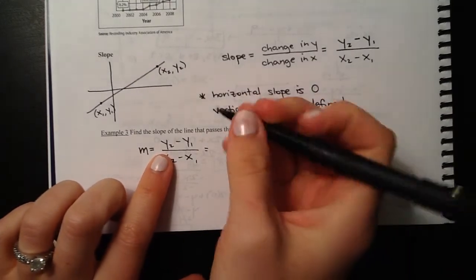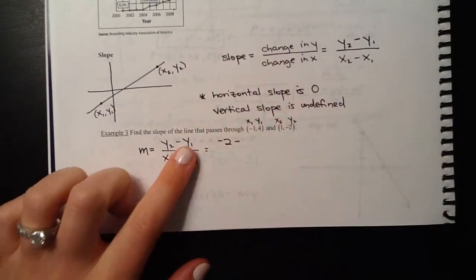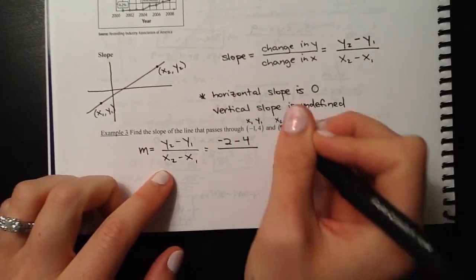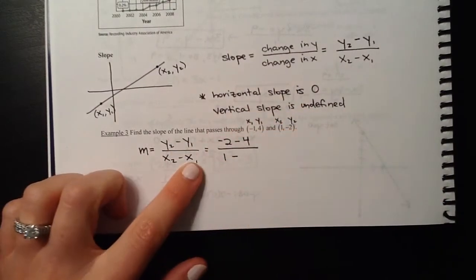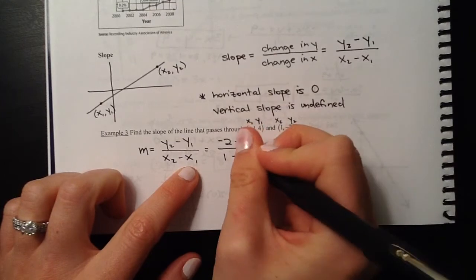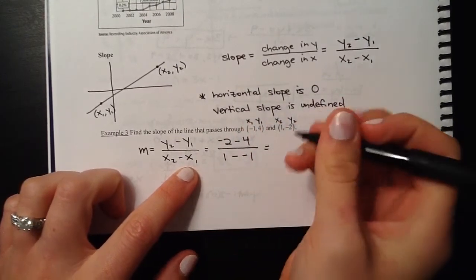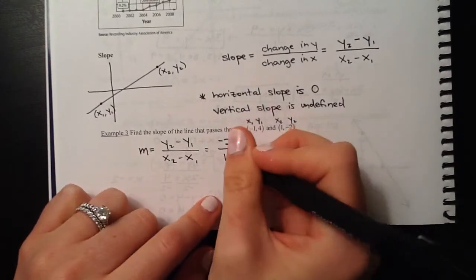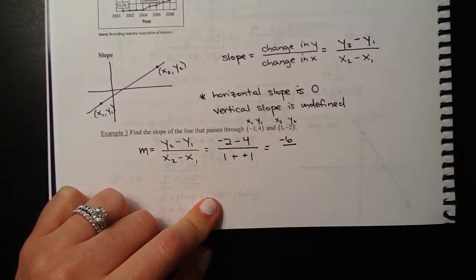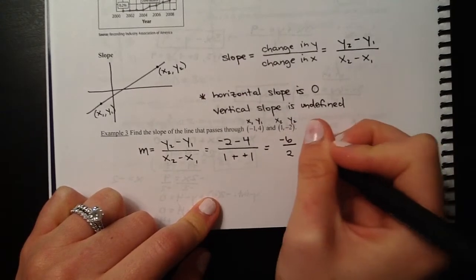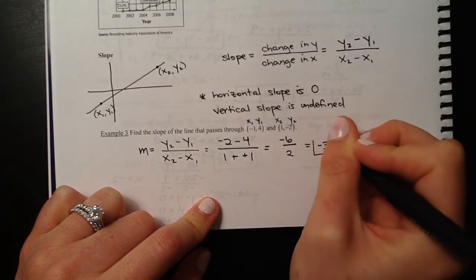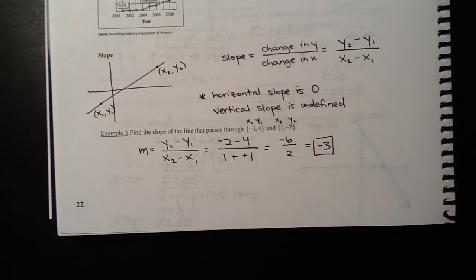Here's our formula: y2 minus y1 over x2 minus x1. Since we've got everything labeled, we can just sub them right in. So y2 is negative 2 minus y1, which is 4, over x2, which is 1, minus x1, which is a negative 1. Negative 2 minus 4 is negative 6, over 1 minus negative 1. Remember, that changes to plus a positive, so we get 2. That reduces down to negative 6 divided by positive 2 is a negative 3.